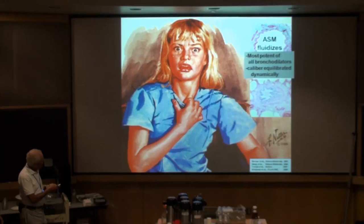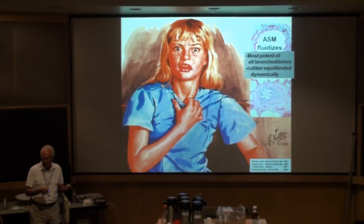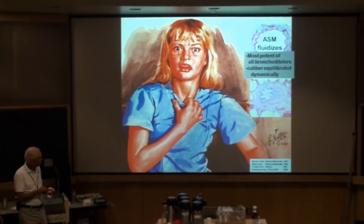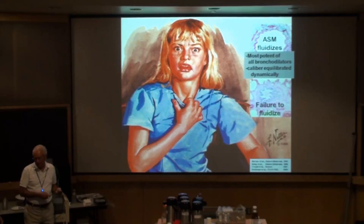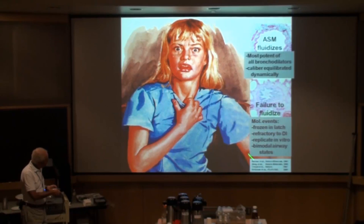With deep breaths, airway smooth muscle fluidizes, and it turns out that just taking a deep breath is the most potent bronchodilator we know of — it totally relaxes airway smooth muscle. You take a deep breath about once every six minutes — a sigh — and that's relaxing the airway smooth muscle. But in asthma, the mechanism fails. Some people had even thought this is the proximal cause of why asthmatics get into trouble: the most potent bronchodilator we carry around with us all the time doesn't work anymore.